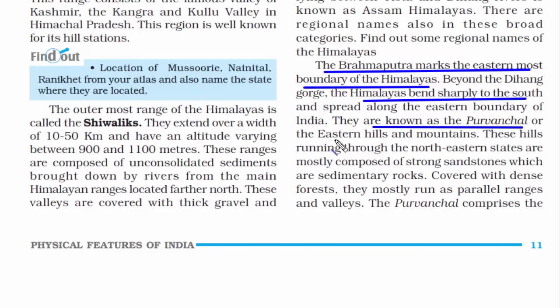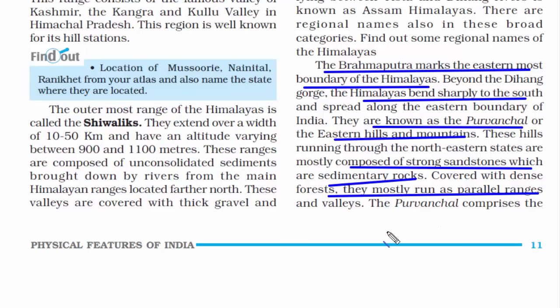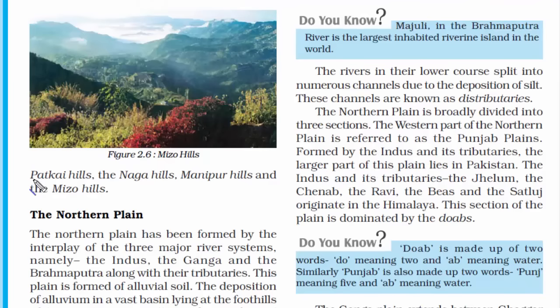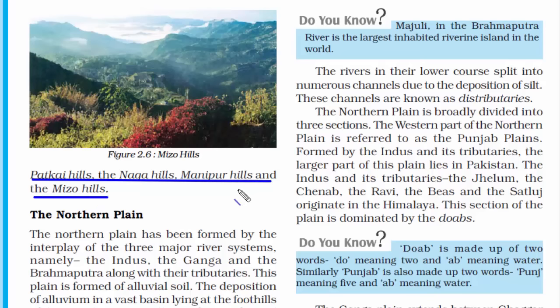The eastern hills and mountains are also known as Purvanchal. The land here is low — there is a depression — and due to the Brahmaputra river, a lot of sedimentary rocks have accumulated over time and vegetation is also very dense. This combination creates many parallel ranges and valleys. The hills that comprise Purvanchal include the Patkai Hills, the Naga Hills, Manipur Hills, and the Mizo Hills.